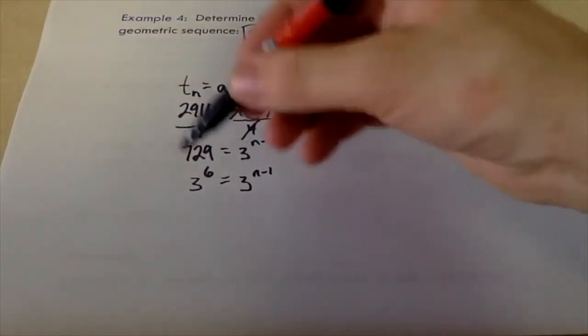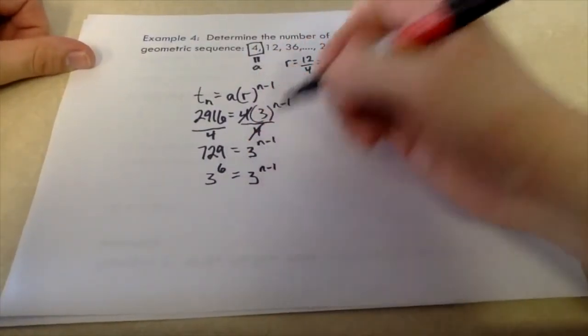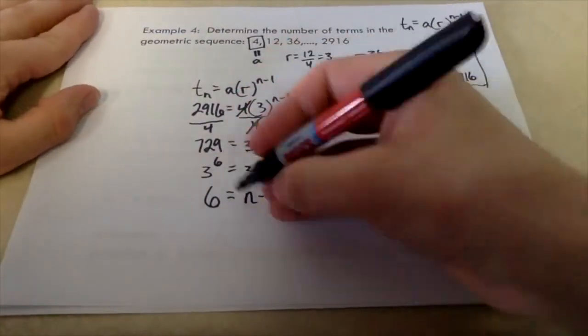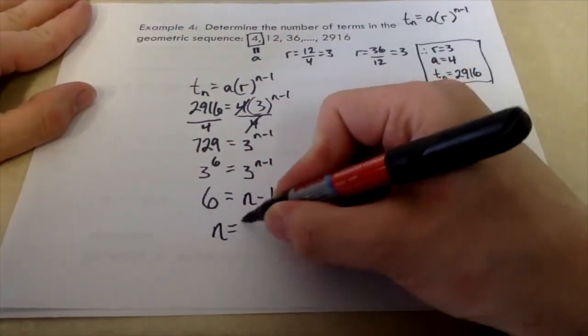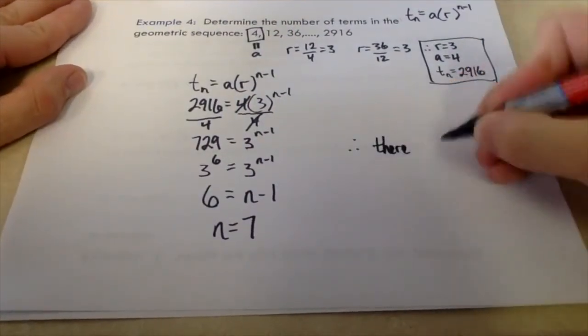Now, because we have a common base, we can just sort of neglect our bases. We'll just look at our exponent. Pretty straightforward, we're just gonna bring one over to the other side, and we get n equals 7. There are seven terms in our sequence.